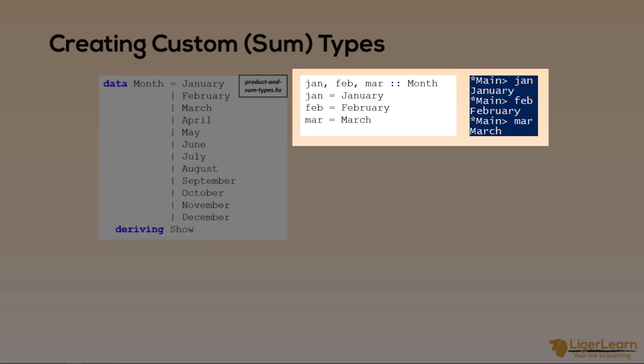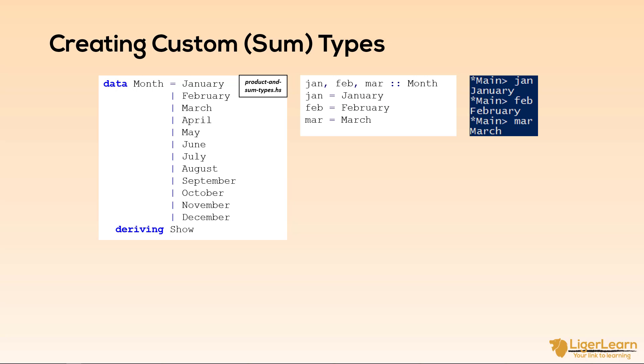The sum types we have seen so far, bool and month, have been very simple. Their constructors take no arguments, and so are known as nullery constructors. Some people refer to data types like these as enumeration types.